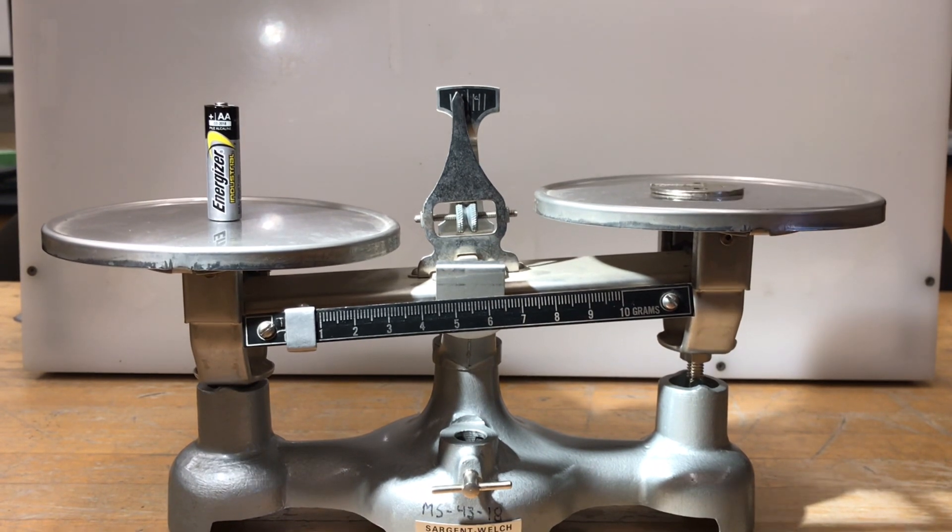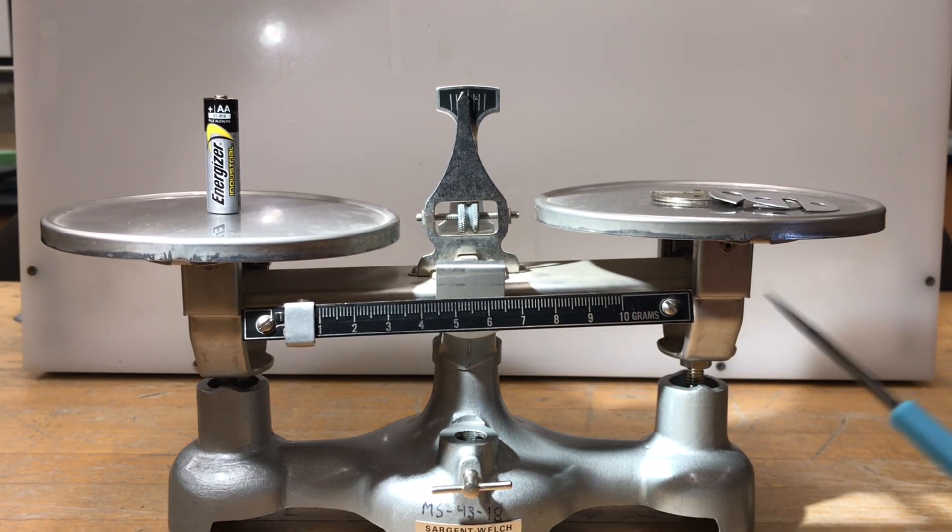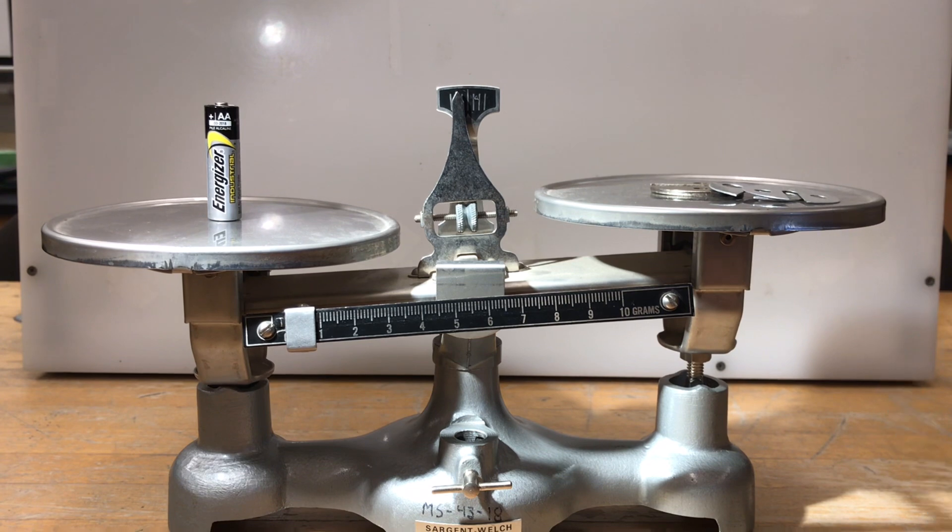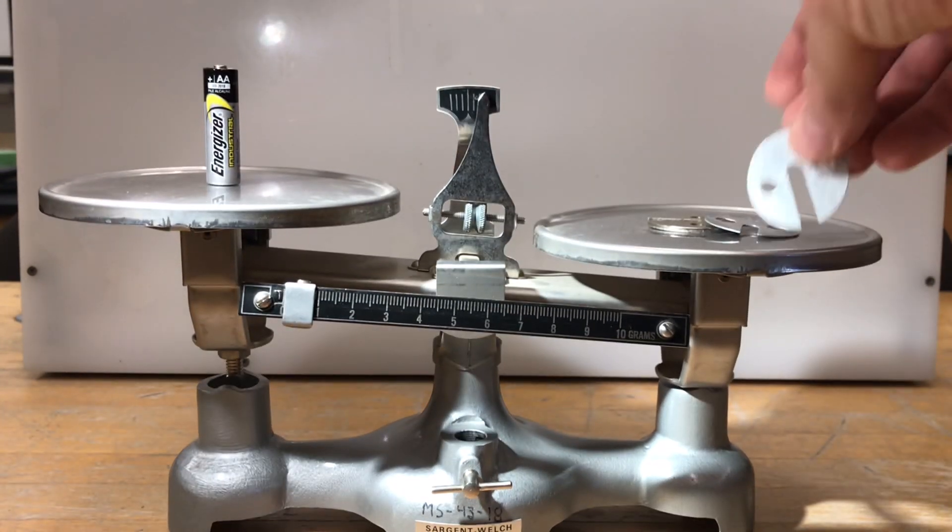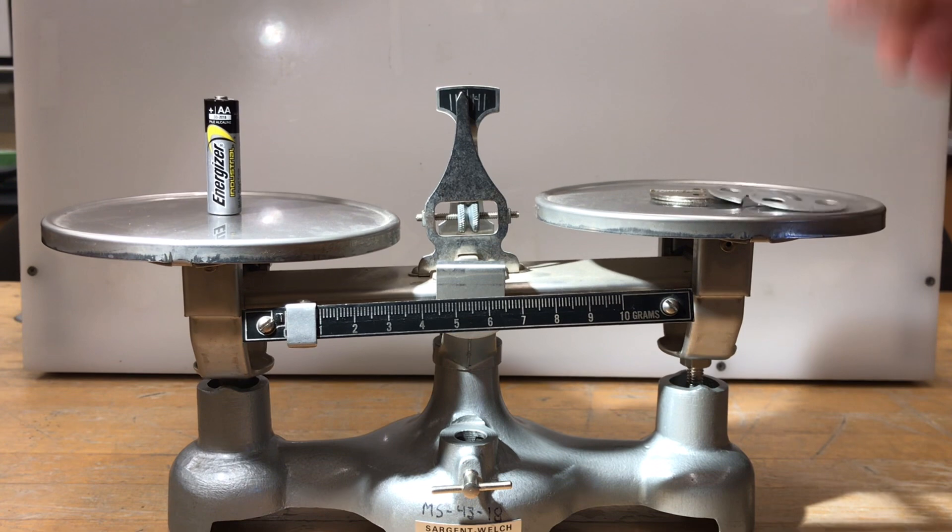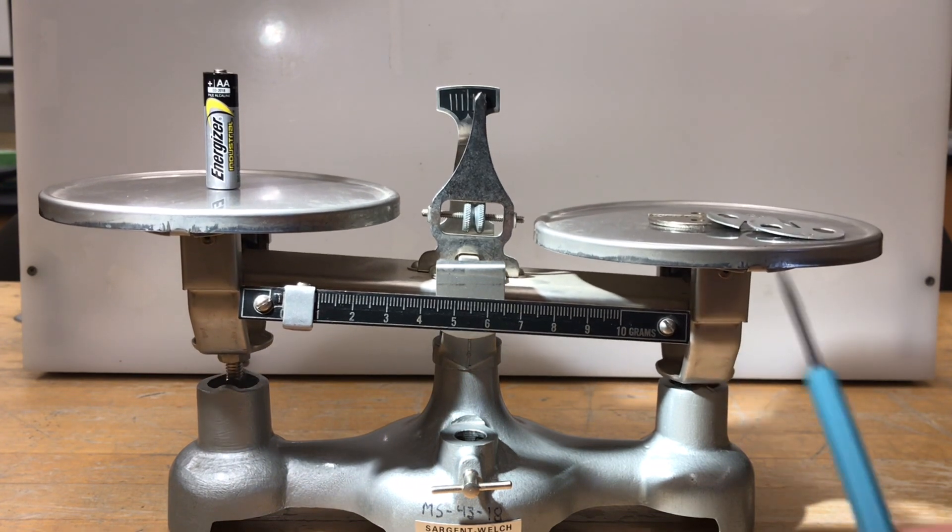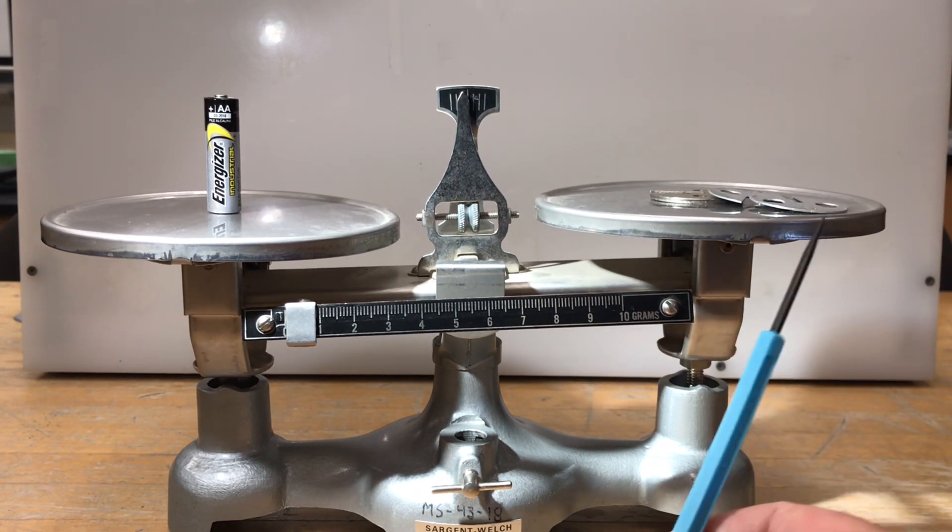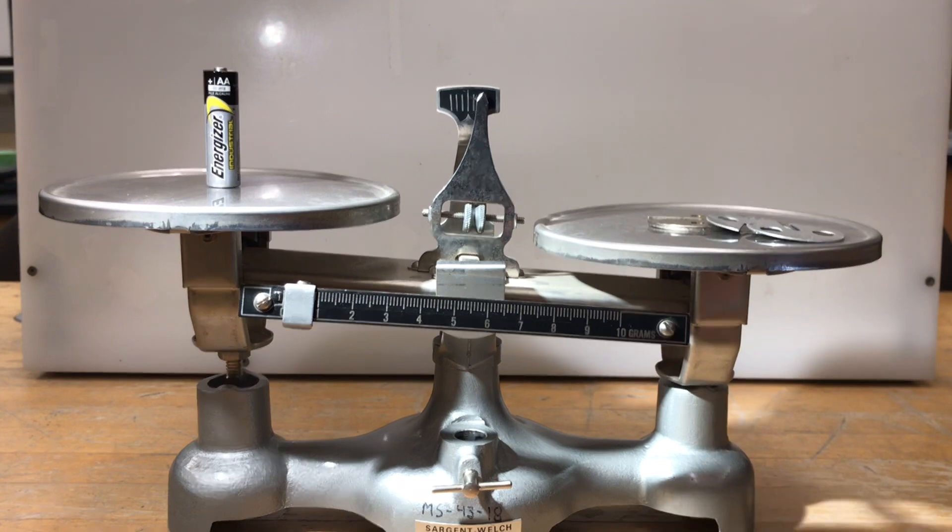Then you can add weights to the other side until it balances. You can see I put 23 grams on here and it got pretty close. If I take off this one and add a two, that's 24. And now it's pretty close, but the balance is actually a little to the right.